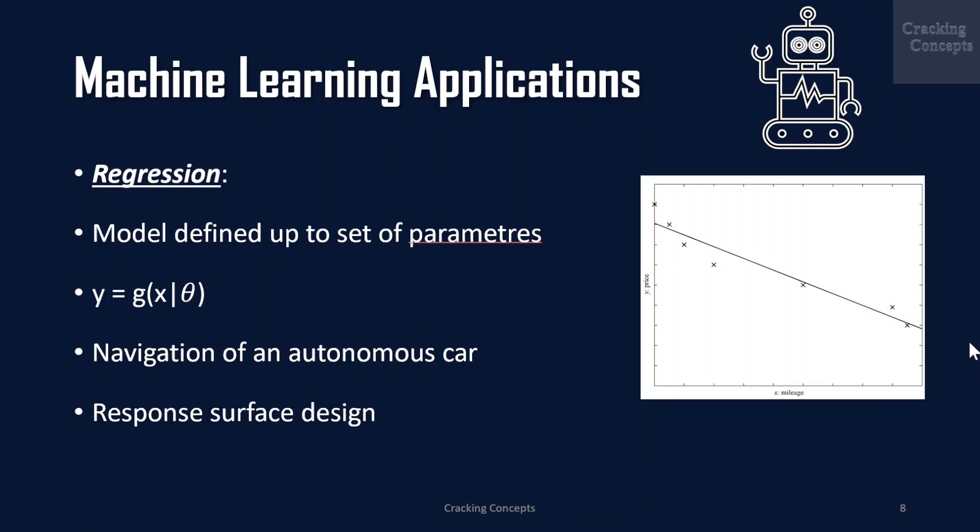In cases where the linear model is too restrictive, we can use a quadratic or higher order polynomial, or any other non-linear function of the input, optimizing its parameters for best fit. Another example of regression is navigation of a mobile robot — for example, an autonomous car — where the output is the angle by which the steering wheel should be turned at each time to advance without hitting obstacles and deviating from the route. Inputs in such a case are provided by sensors on the car like a video camera, GPS, and so forth.